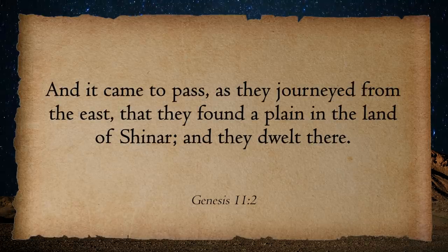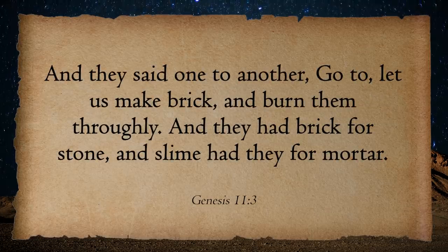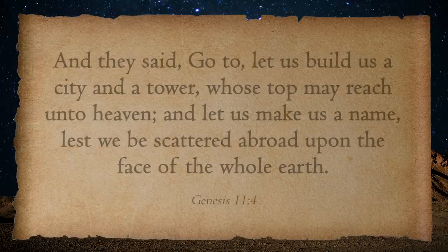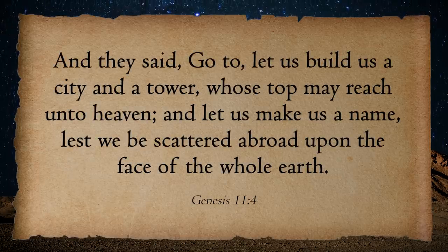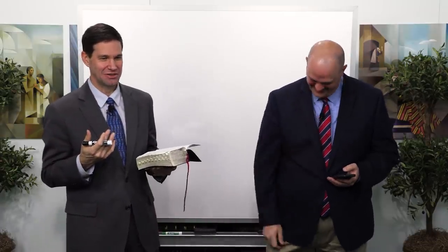Verse 2 says it came to pass as they journeyed from the east they found a plain in the land of Shinar. They say, 'Let's make brick and burn them thoroughly — they had brick for stone and slime for mortar.' Verse 4: 'Go to, let us build us a city and a tower, whose top may reach unto heaven, and let us make us a name, lest we be scattered abroad upon the face of the whole earth.' Which is so ironic — they don't want to be scattered, and yet from that group there is a large group that's going to be scattered upon the whole face of the earth. These Jaredites are going to leave and literally be scattered in a really good way to the Promised Land.